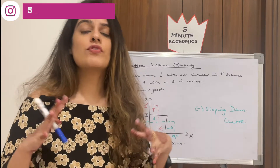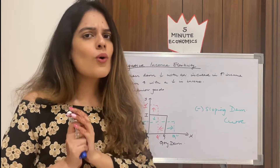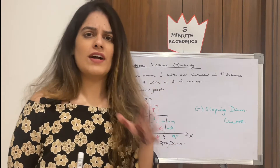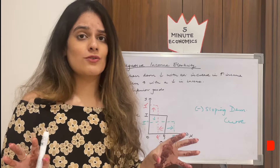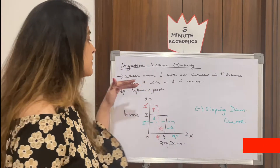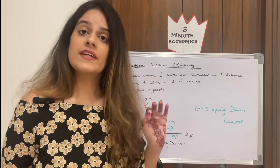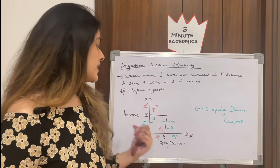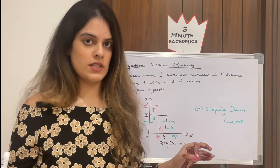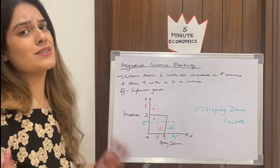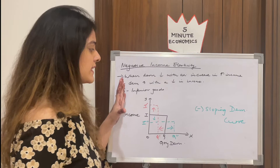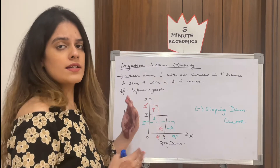Don't confuse this with Giffen goods — Giffen goods and inferior goods are totally different. I've made a video on types of goods if you want to clear up that doubt. The yardstick to measure an inferior good is income, not price — please remember that, as many students tend to get confused.